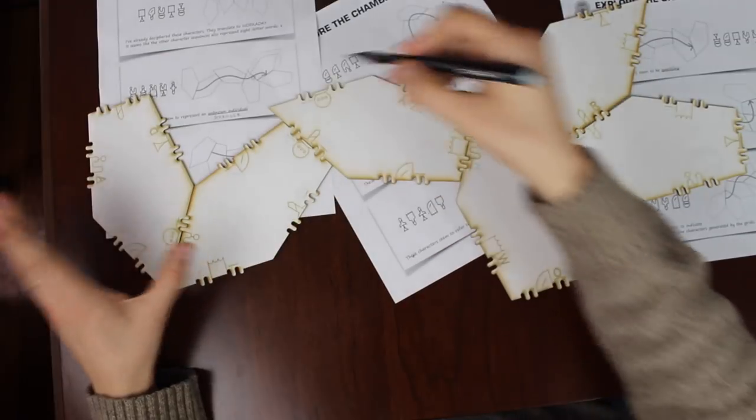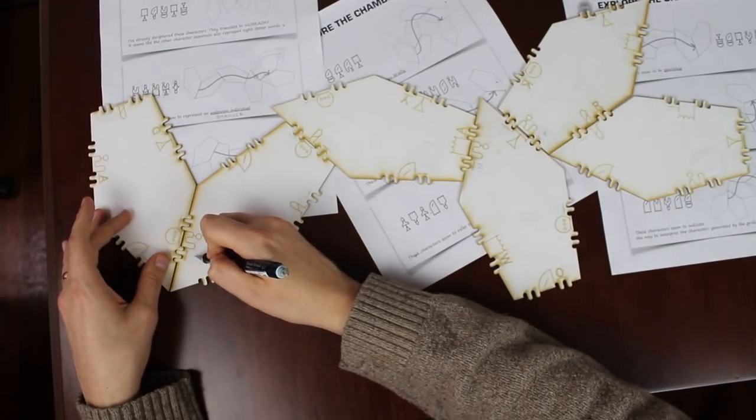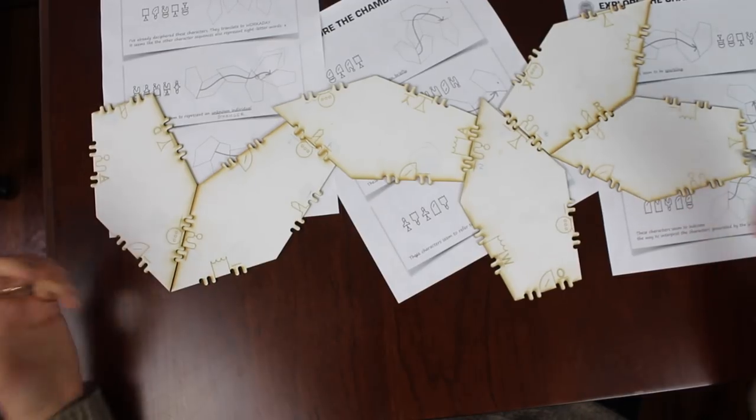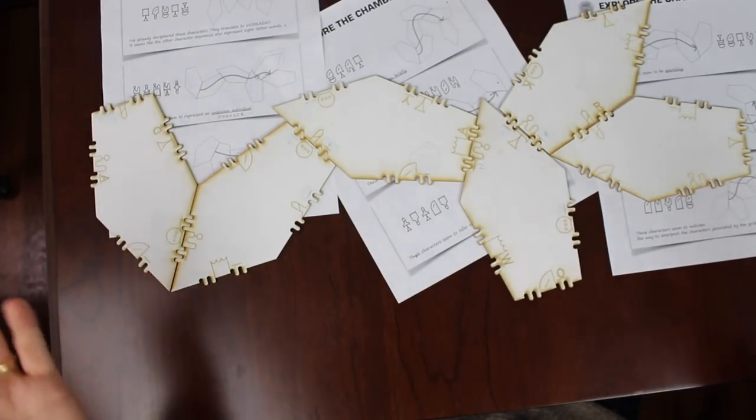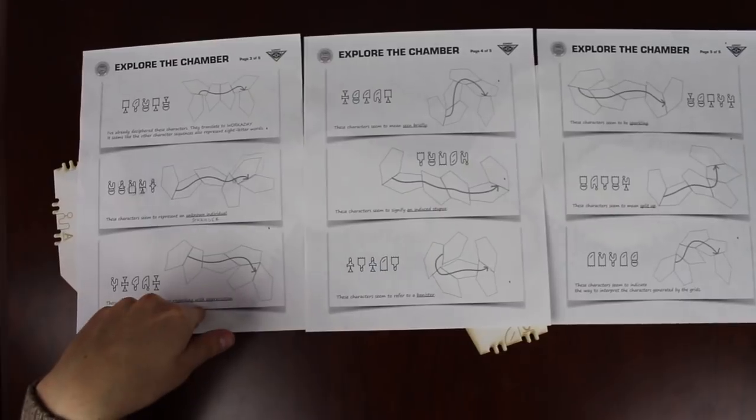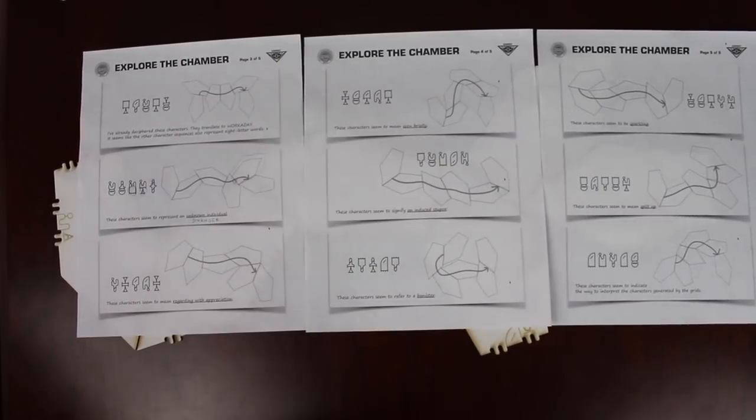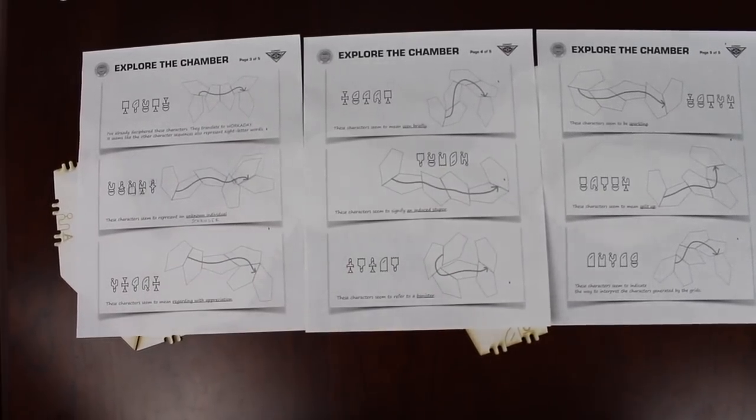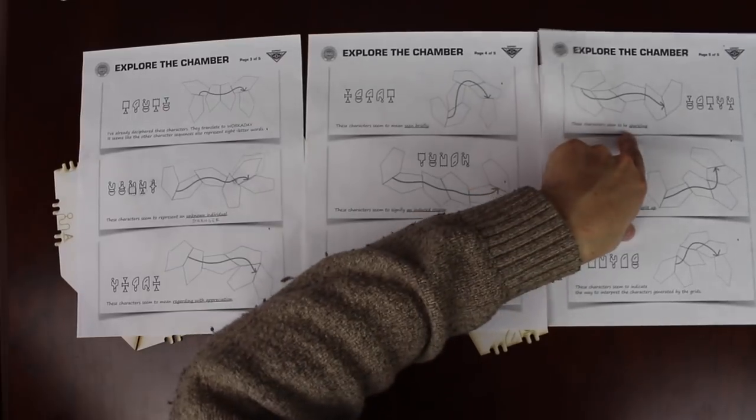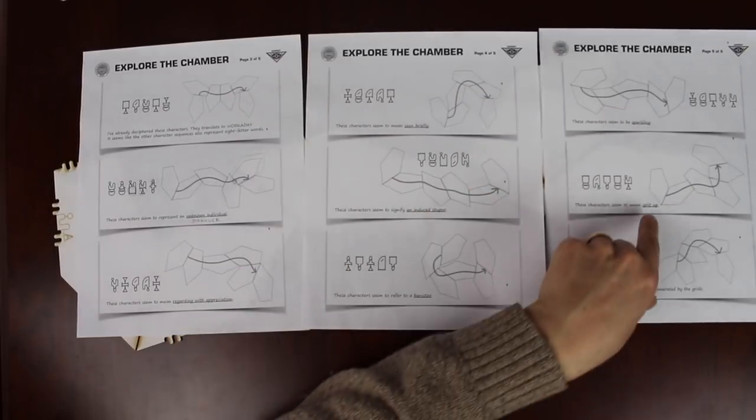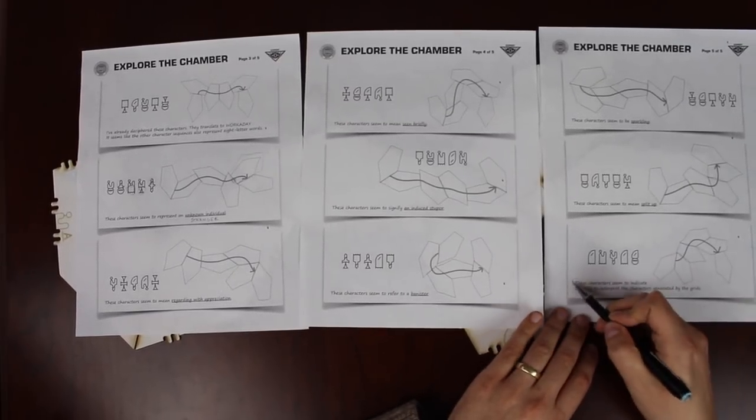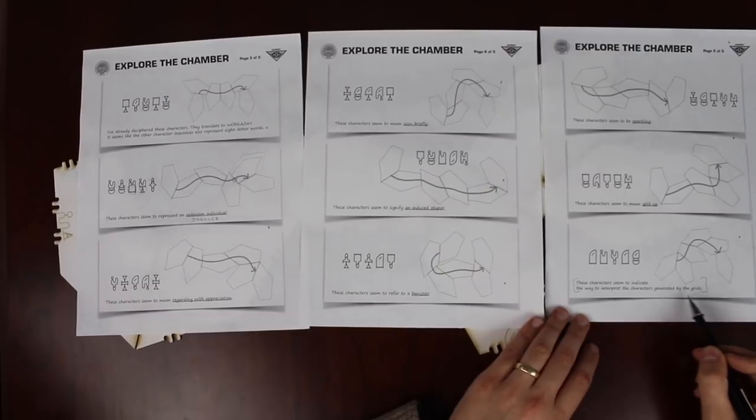Filling in the last two pieces, we can now spell out the full phrase, stranger. And it seems like we're ignoring the first and the last characters. So by doing things like this, we can get all of the letters on these pieces. Just to go through these definitions: regarding with appreciation is admiring, seen briefly is glimpsed, an induced stupor is sedation, a banister is a handrail, sparkling is glittery, split up is separate. And then you have this last one, which doesn't have a definition.